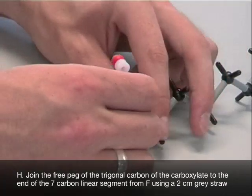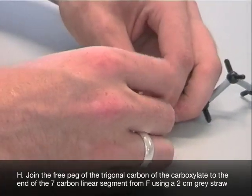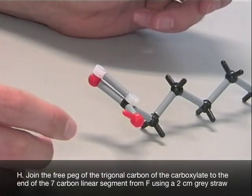Join the free peg of the trigonal carbon of the carboxyl group to the end of the seven carbon linear segment from step F using a two centimeter grey straw.